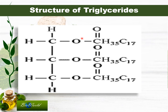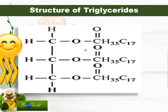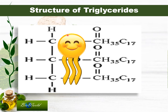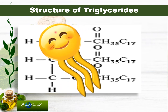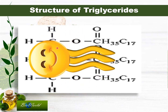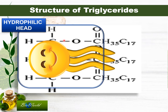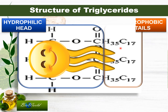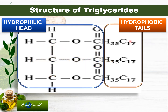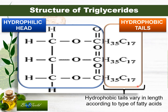Now let's have a closer look at the structure of the triglyceride and compare it with the simplified diagram. The hydrophilic portion covers the whole of the glycerol as well as the carboxyl group of the fatty acid, whereas the tail is the hydrocarbon chain that is hydrophobic. This hydrocarbon chain can vary in length according to the type of fatty acid used.